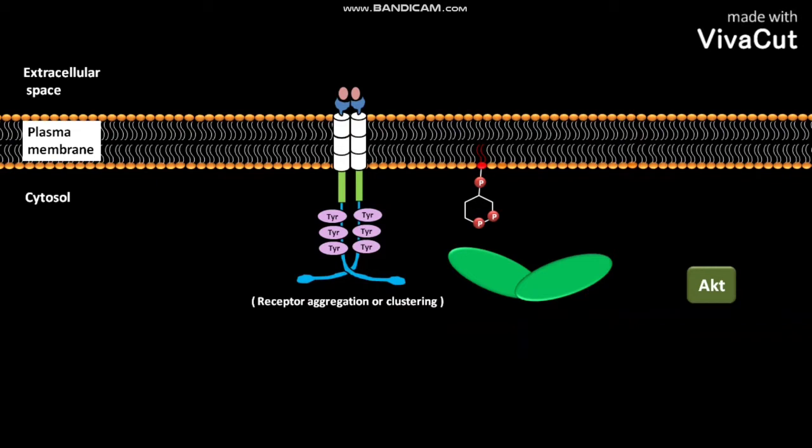This receptor aggregation or clustering forms a dimer. In this dimer, the tyrosine kinase associated with each receptor phosphorylates tyrosine amino acid of its neighboring receptor. This is called cross phosphorylation. Due to this cross phosphorylation, the receptor tyrosine kinases become active.